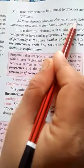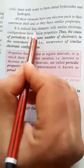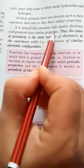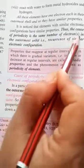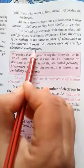They react with water to form metal hydroxides and hydrogen. All these elements have one electron each in their outermost shell and so they have similar properties. It is noted that elements with similar electronic configuration have similar properties. Thus, the cause of periodicity is the same number of electrons in the outermost orbit, the reoccurrence of similar electronic configuration.